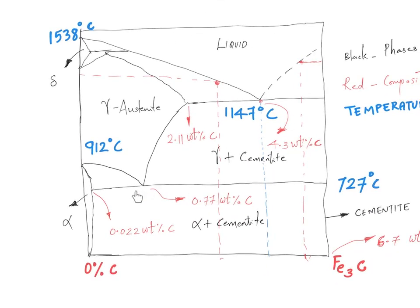Looking at the phase diagram, we are referring to this particular eutectoid composition point. Before discussing isothermal transformation diagrams, let's do a thought experiment. We have an iron-carbon alloy of eutectoid composition and we are cooling it from a temperature of around 1000 degrees centigrade.